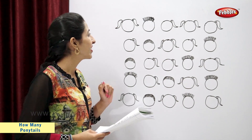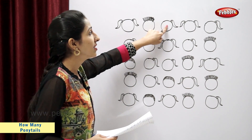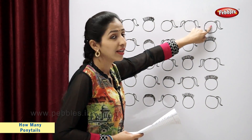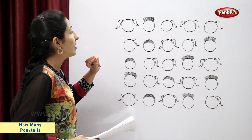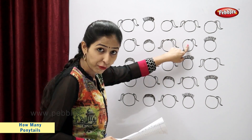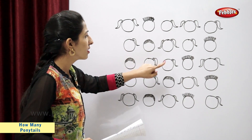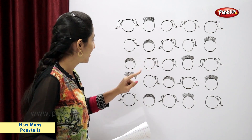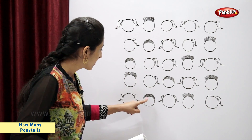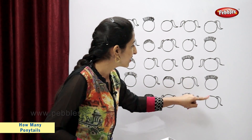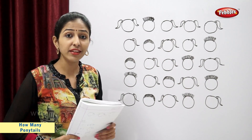Let's count. One ponytail: one, two, three, four, five, six, seven, and eight. So there are eight children with one ponytail.